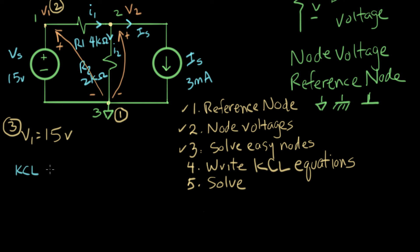And we write I1 minus I2 minus IS equals zero. So right now we're working on step four. And now we're going to do, this is the essence of the node voltage method.